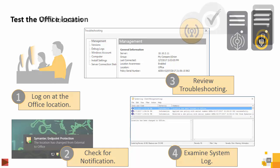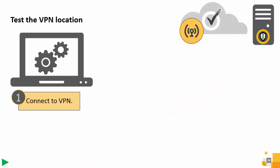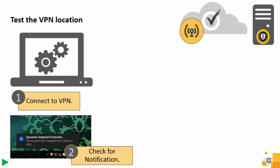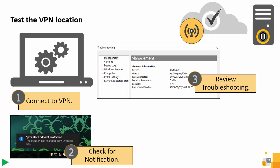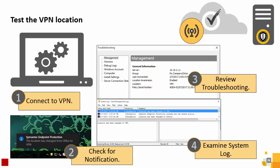On the client computer, SoluCell connects to the VPN. A notification appears in the system tray showing that the location has changed from office to VPN. Angela opens the SEP client UI, clicks Help, and selects Troubleshooting. In the troubleshooting window, the location now shows as VPN. In the system logs, Angela can also see that a new policy was applied before the client switched over to the VPN location. Note that for the VPN location, clients retrieve content from a default management server and public Live Update servers.